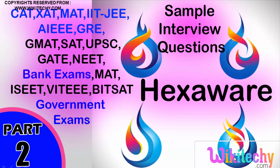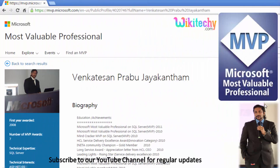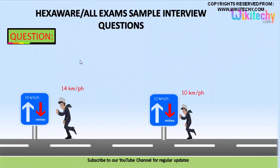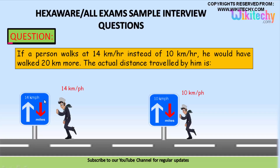Welcome to wikiteki.com. Here is a question from Hexaware, which is also asked in many company and government exams and in higher studies. My name is Winkert, I'm a Microsoft Most Valuable Professional, and you can see my Microsoft profile on Microsoft.com. The question is: if a man walks at 14 kilometers per hour instead of 10 kilometers per hour, he would have walked 20 kilometers more. What is the actual distance traveled by him?